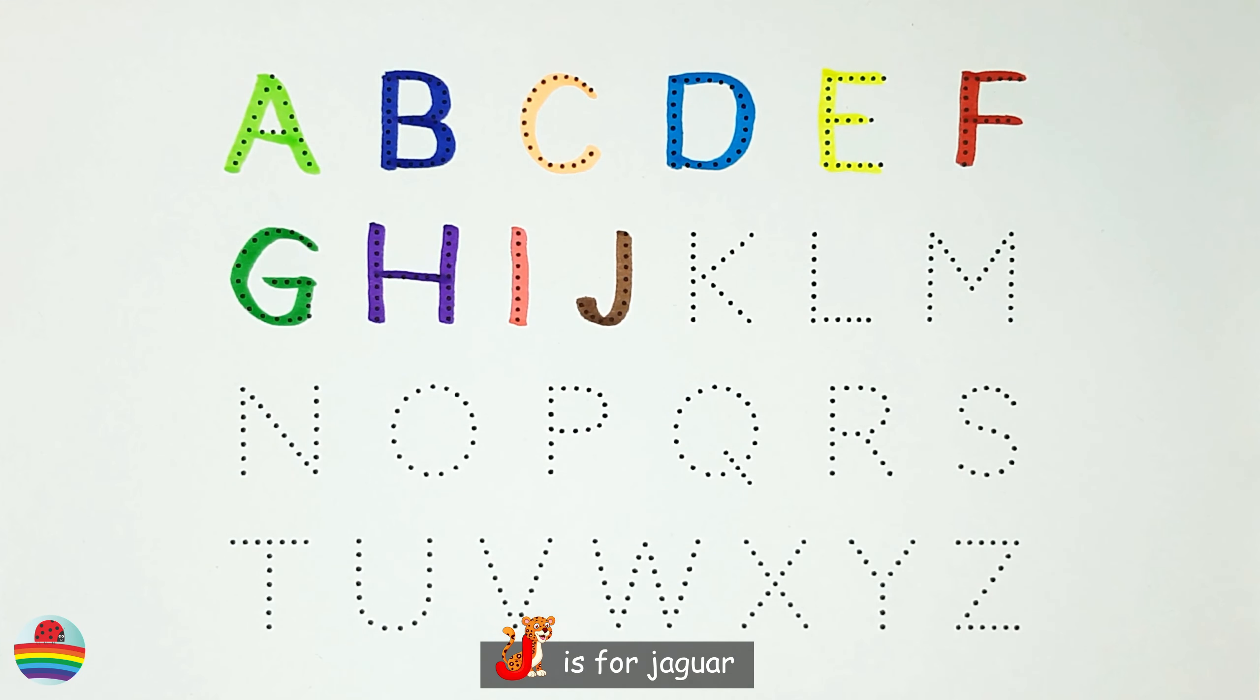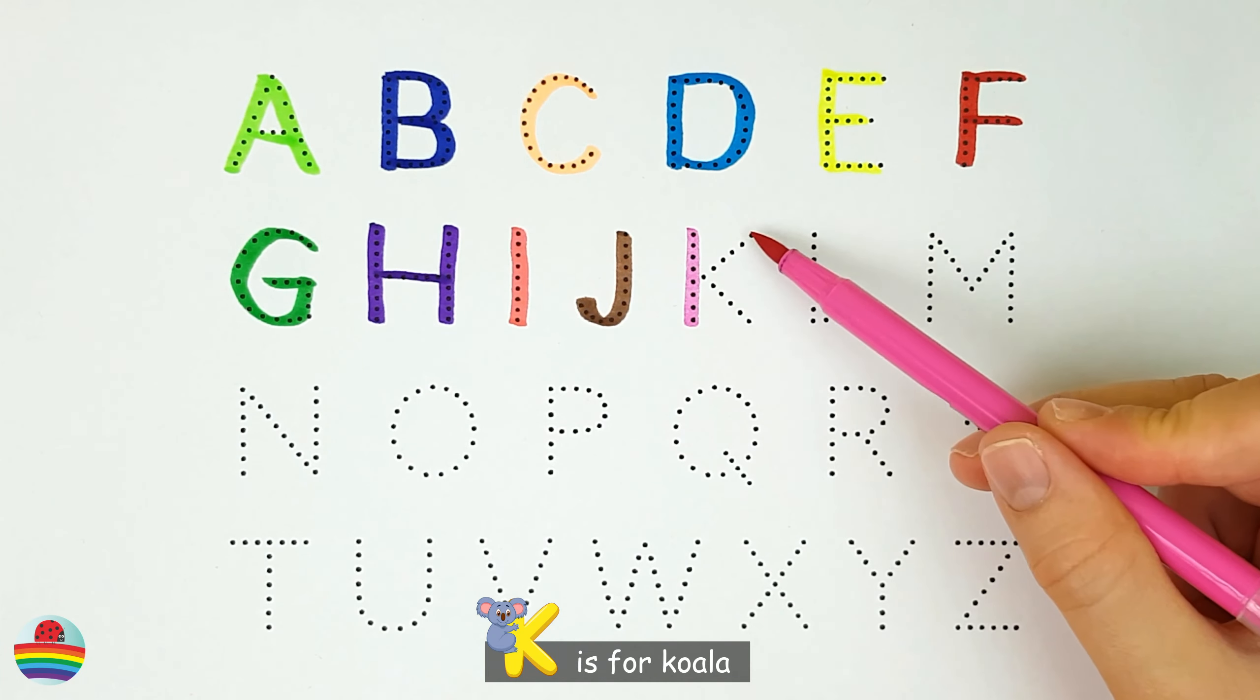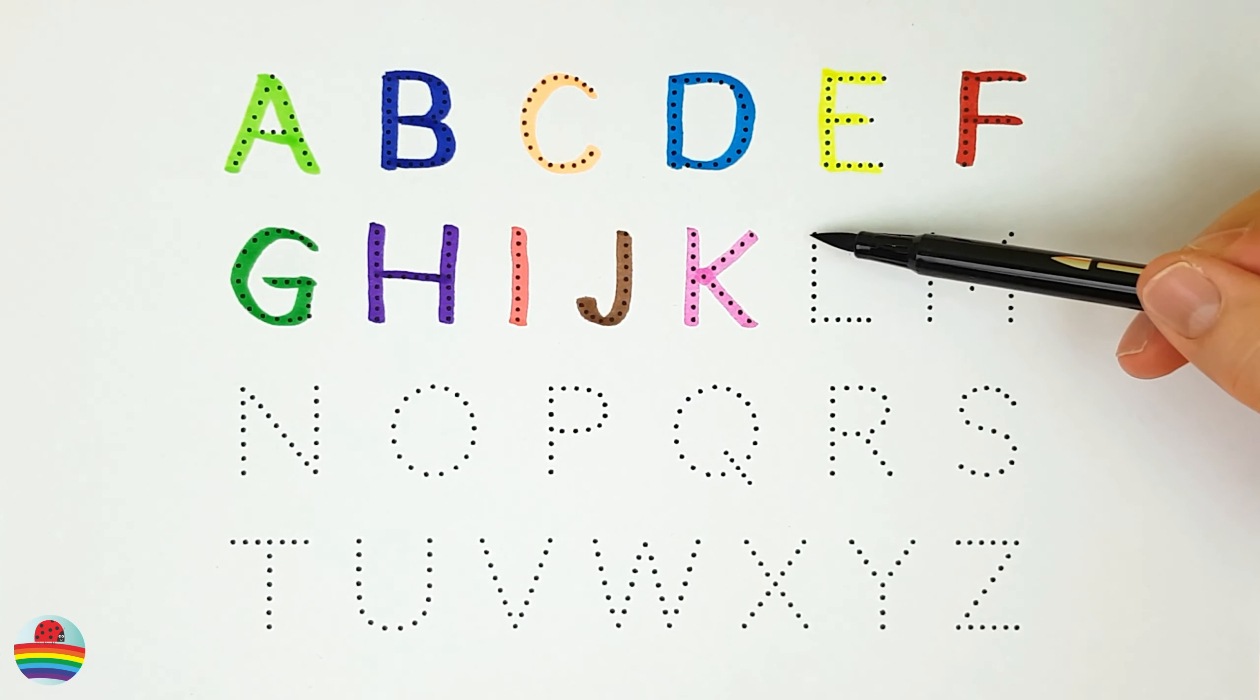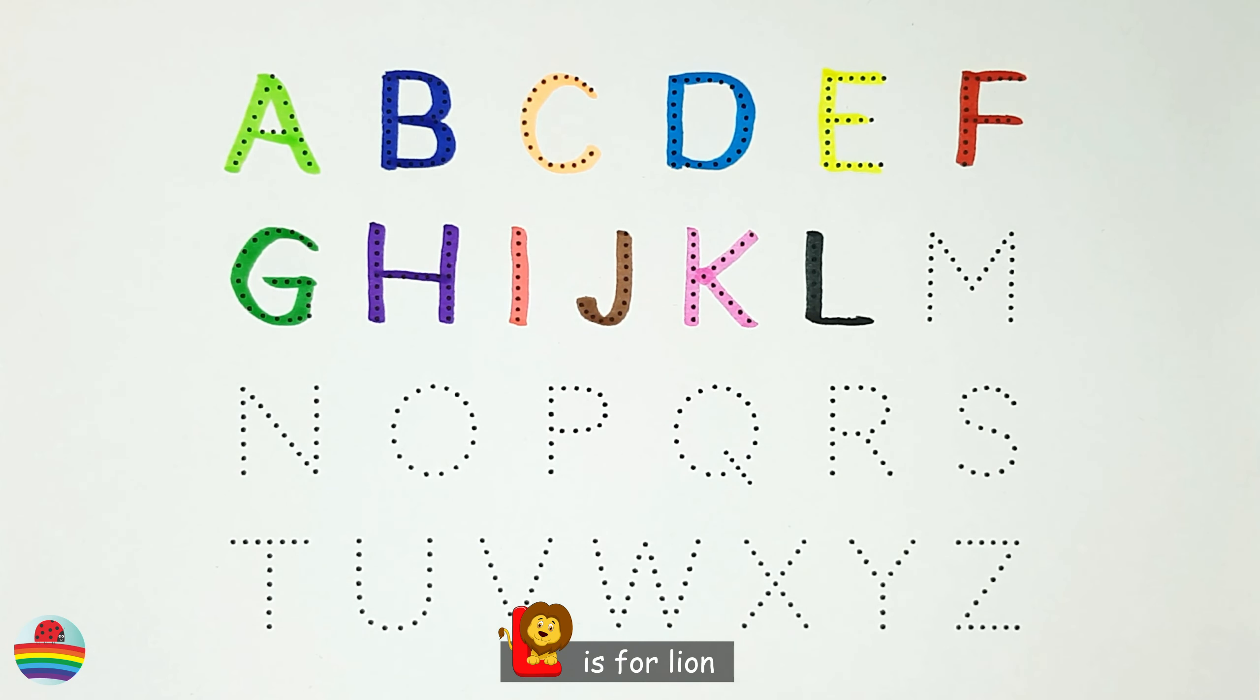J. J is for Jaguar. K. K is for Koala. L. L is for Lion.